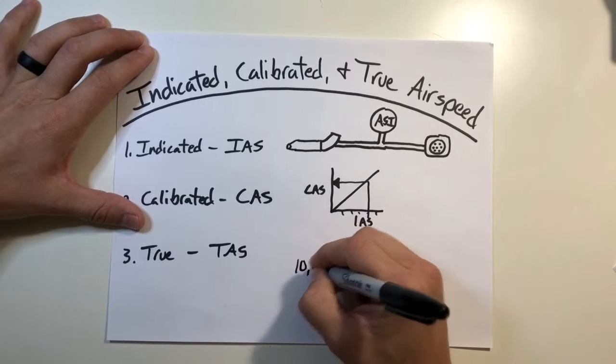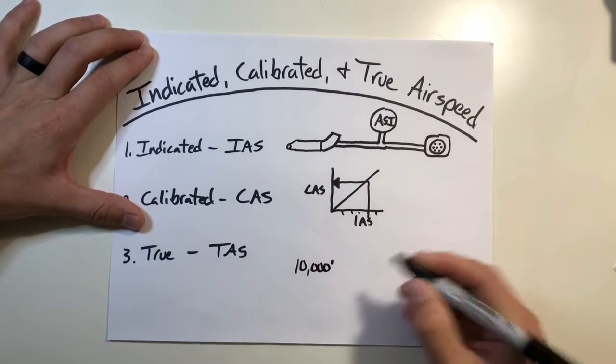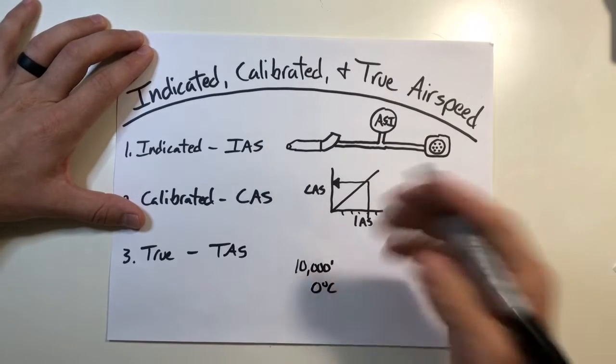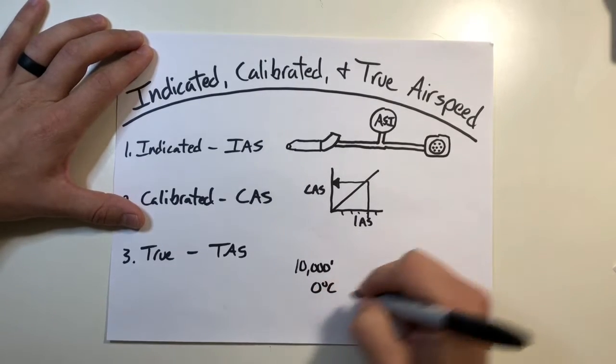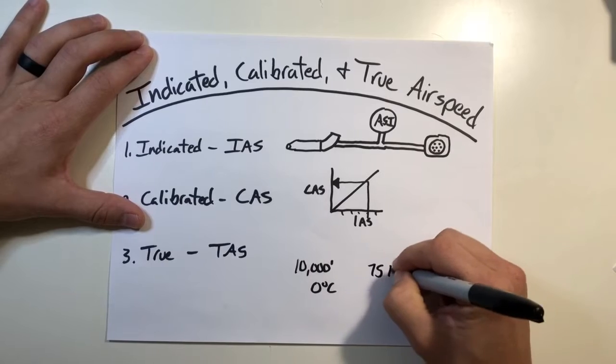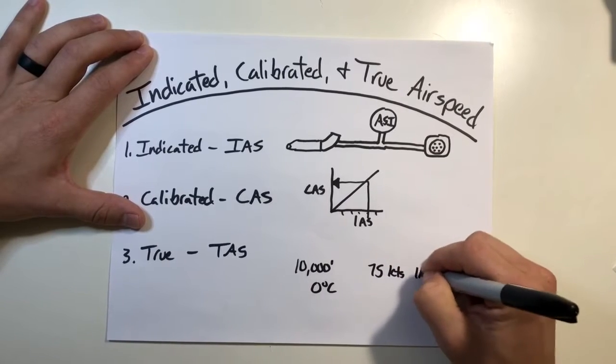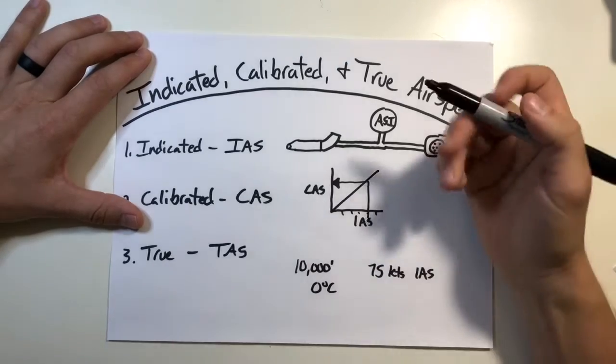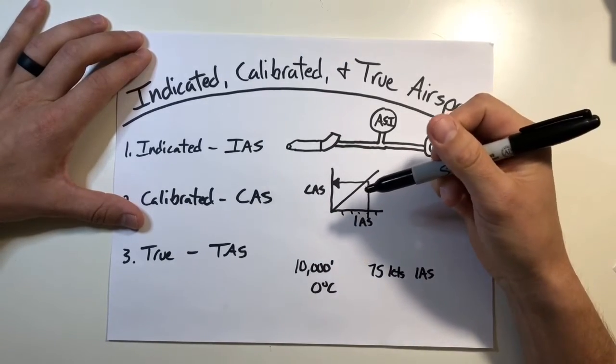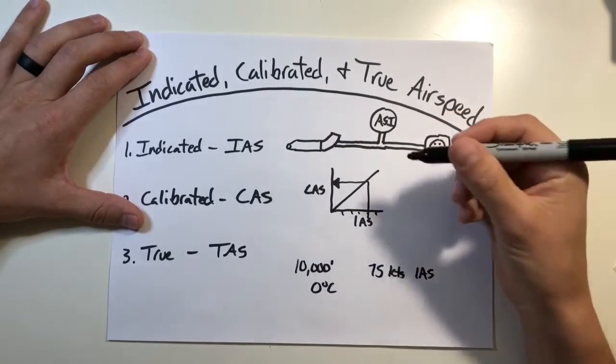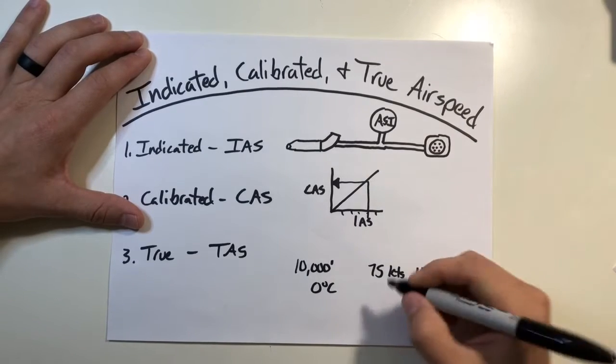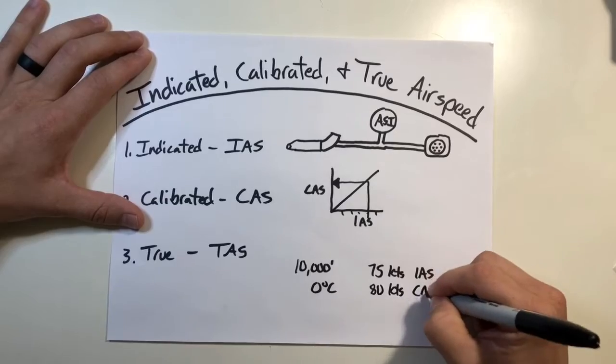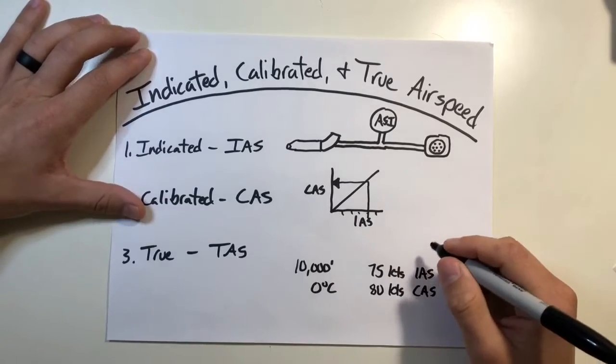Let's imagine you're flying at say 10,000 feet. The temperature up there is zero degrees Celsius, and let's just say you're flying along at a nice, comfortable 75 knots indicated airspeed. All right, so you do your calibrated airspeed conversion based on your manufacturer's charts, and it turns out that 75 knots indicated airspeed is actually about 80 knots calibrated airspeed.